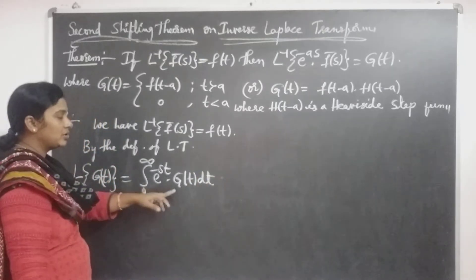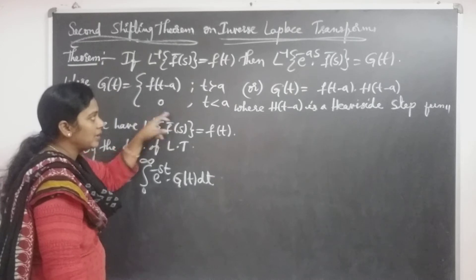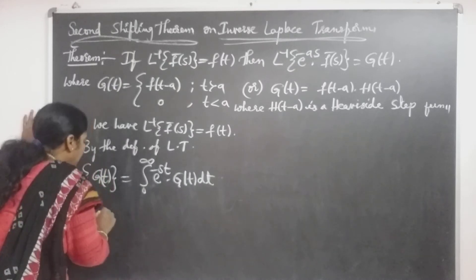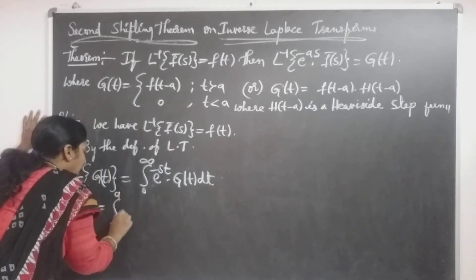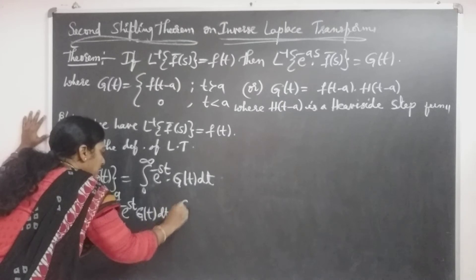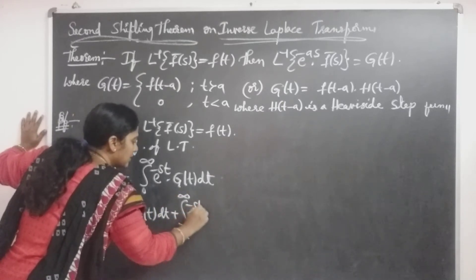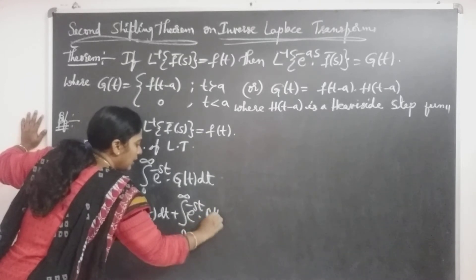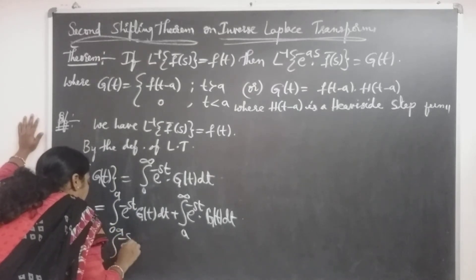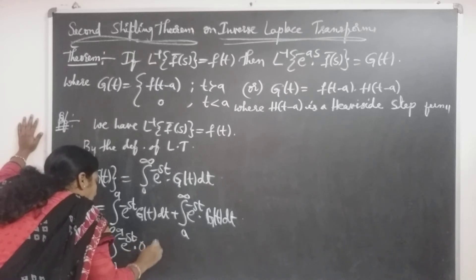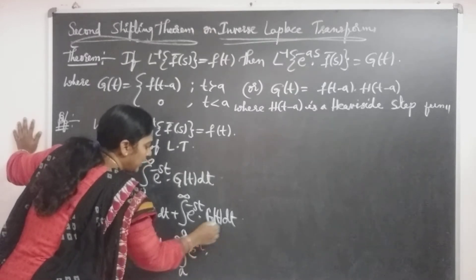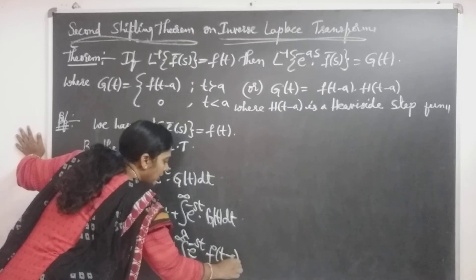Here g of t is a piecewise function that can be divided into two partitions: one from 0 to a, another from a to infinity. So this improper integral can be split into two integrals: integral from 0 to a of e to the power minus s·t times g of t dt, plus integral from a to infinity of e to the power minus s·t times g of t dt. In place of g of t we substitute f of t minus a.